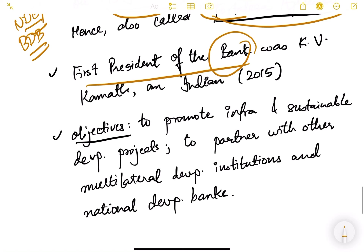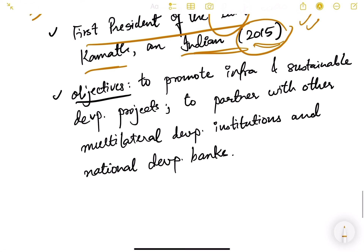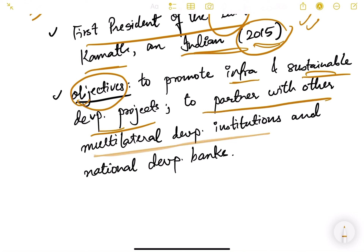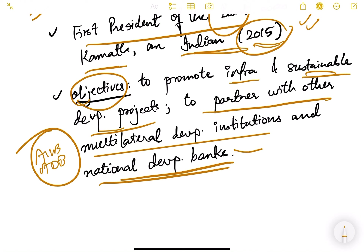The first president of the New Development Bank was KV Kamath, an Indian, appointed in 2015. The objectives of the NDB are to promote infrastructure and sustainable development projects, and to partner with other multilateral development institutions like AIIB, ADB, and national development banks — for example, NABARD for agriculture and rural development, or SIDBI for small industries.